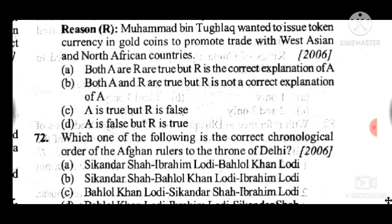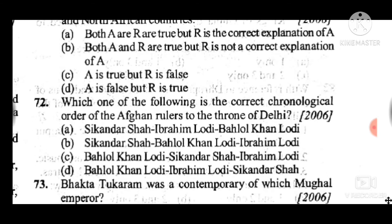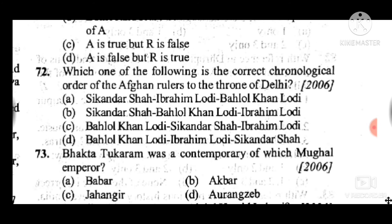Question 72: Which one of the following is the correct chronological order of Afghan rulers to the throne of Delhi? Answer to question 72 is C: Bahlul Lodi, then Sikandar Shah Lodi, last was Ibrahim Lodi. Question 73: Tukaram was a contemporary of which Mughal emperor? Answer to question 73 is C: Jahangir.